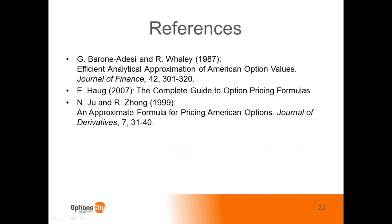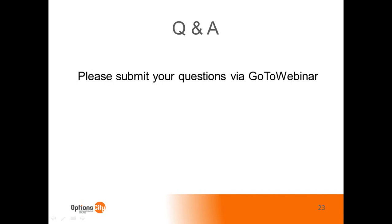That pretty much sums up the description of the two models, how they compare, and when you might choose one over the other. I've included references to the original papers for the Whaley model and the Xu Zhong model. If anyone wants copies, feel free to contact us via Maria and we'll be happy to send those on. One quick note: the Whaley model here is not the same as the Whaley of VIX fame, but it is the same Whaley as in the mathematician.